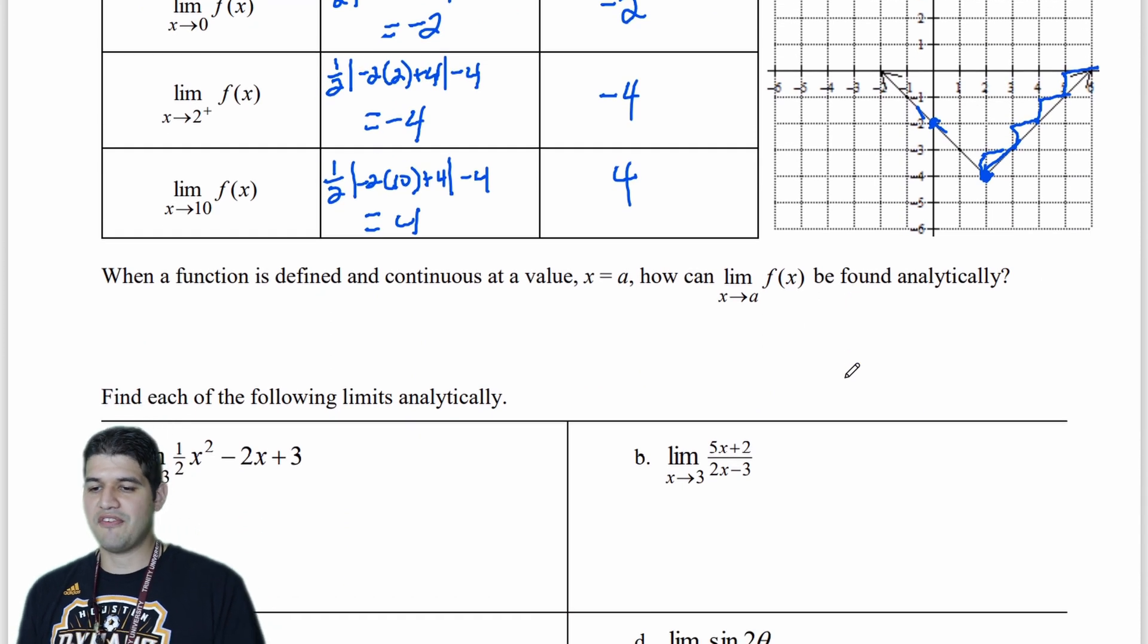So here is going to be a definition. When our function is defined and continuous at a value where x is equal to a, how can it be found, how can the limit be found analytically? So I'm going to rewrite it again.